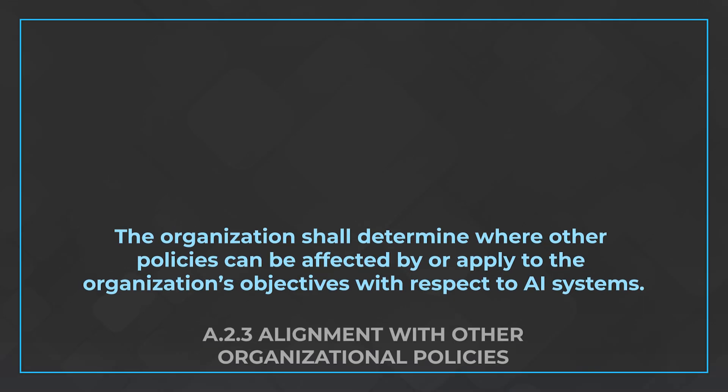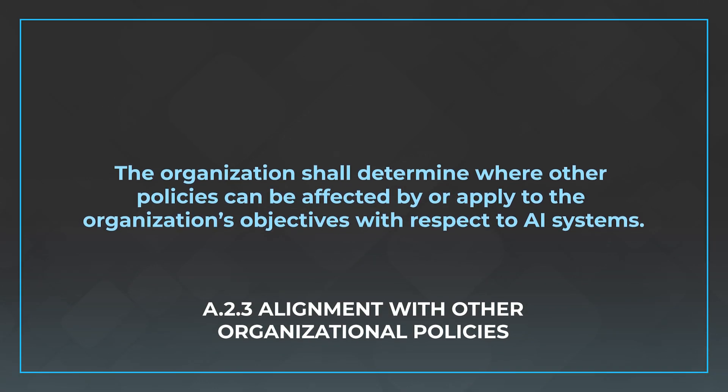A.2.3 is going to be alignment with other organizational policies. It's important that you spend time thinking about how the use of AI lines up with the rest of the management systems or business processes you have in place. The control states verbatim: the organization shall determine where other policies can be affected by or apply to the organization's objectives with respect to AI systems.